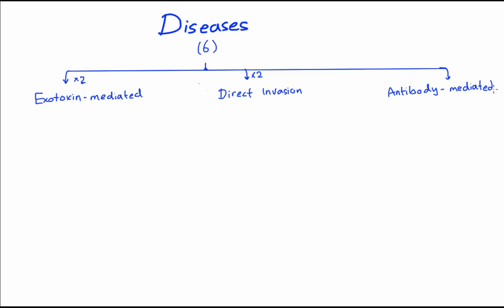Let's talk about the diseases. We've already covered some of them. Strep pyogenes causes six diseases, and we can classify them. Two of the diseases are exotoxin mediated, two are caused through direct tissue invasion, and two are caused by antibodies.